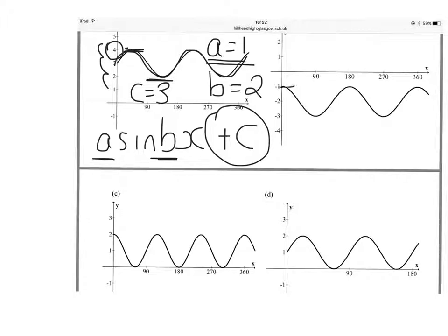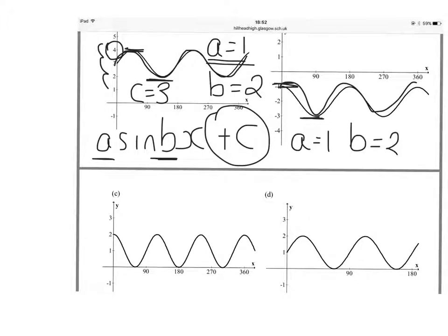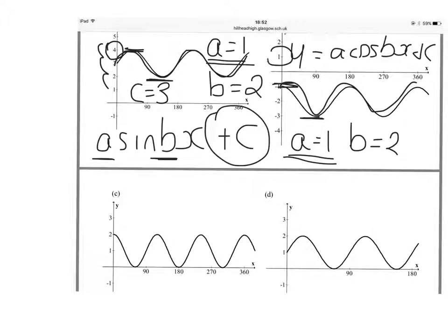Second one: the curve goes up to minus 1, down to minus 3. That's a total height of 2. Half that, and A is equal to 1. There are 2 complete curves in 360. This is the curve A cos Bx plus C. The curve should go up to its amplitude of 1, but it only goes up to minus 1, which means it's been moved down 2 units. Therefore, C is equal to minus 2.